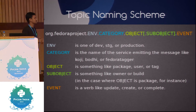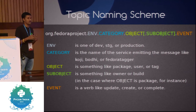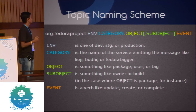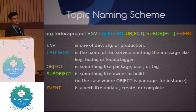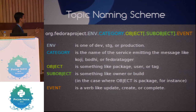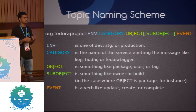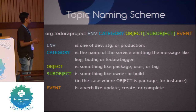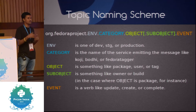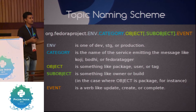The producer sends a message on a particular topic and the consumer can subscribe to a particular topic. The topic is defined as org.fedoraproject.env — then the category, object, and event. The env is basically the environment: you can set up an environment for your staging machine, your production machine, or your local system. You can use dev, staging, production, or any other name you want, and the consumer will consume messages based on that environment.